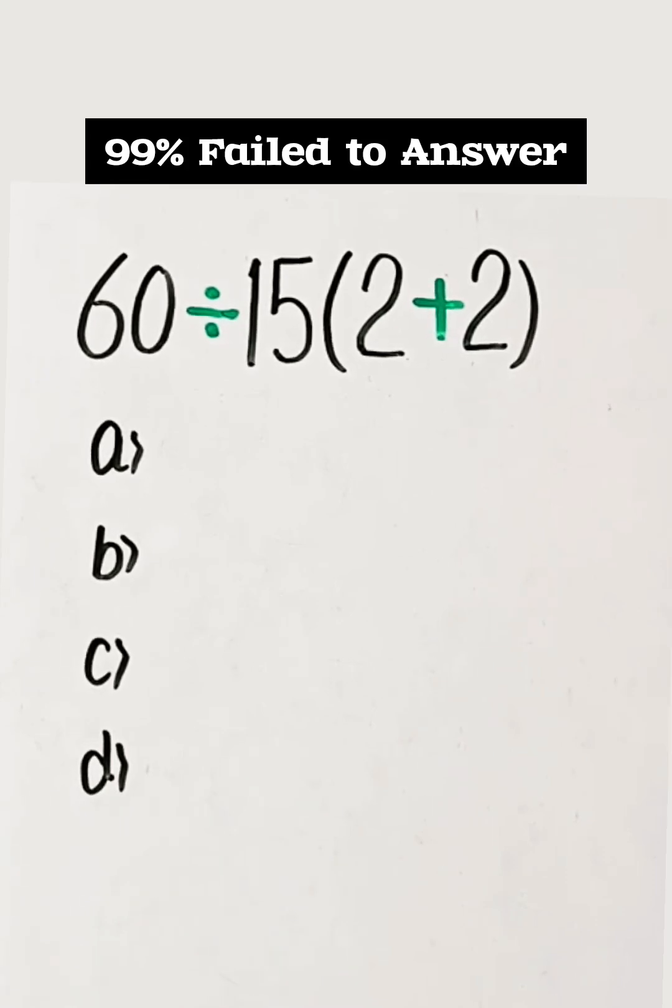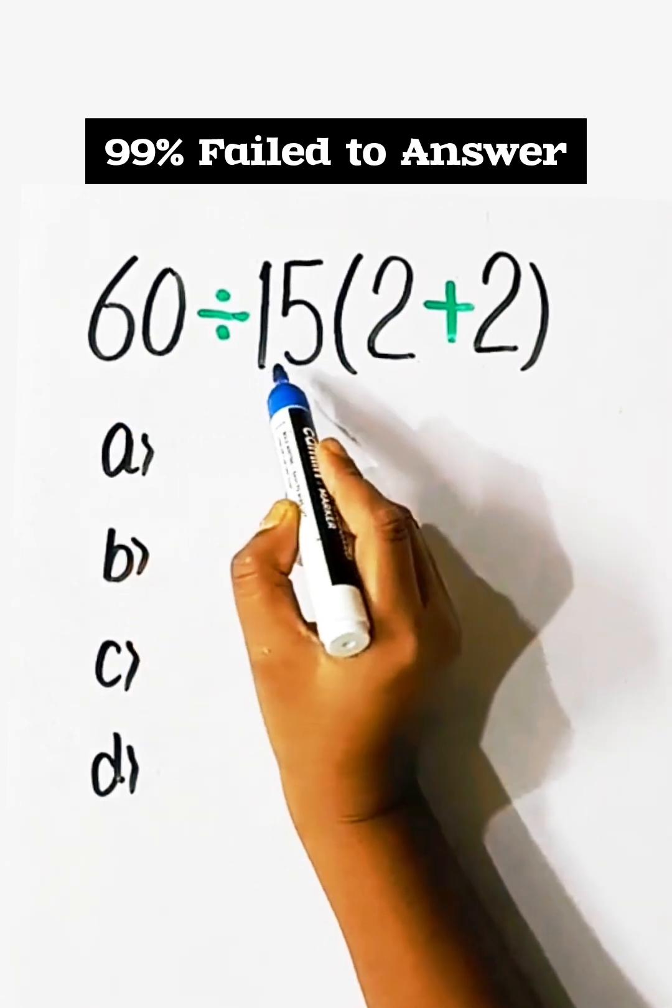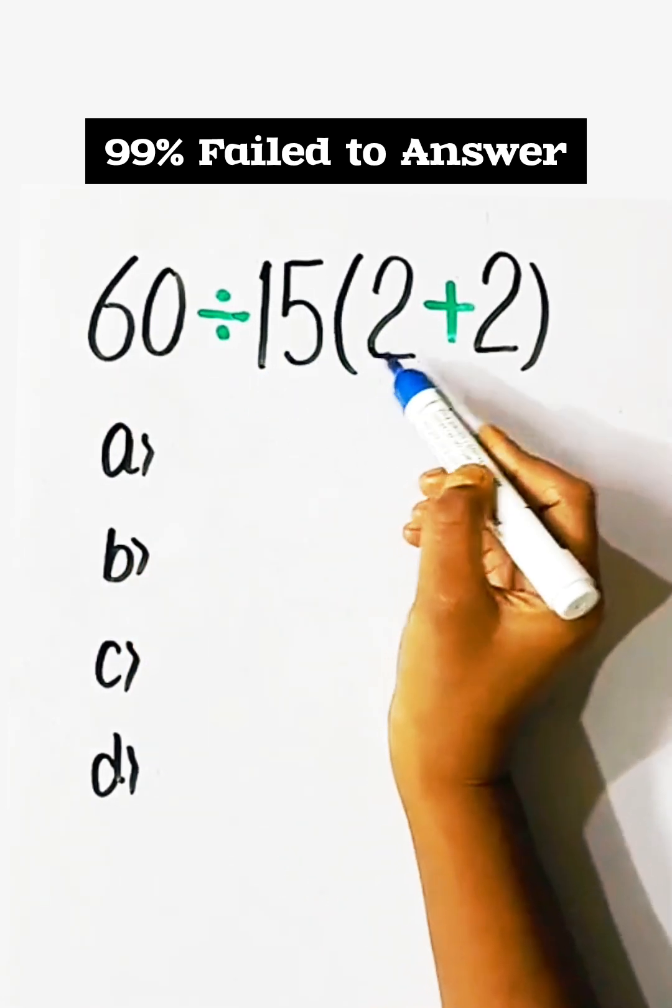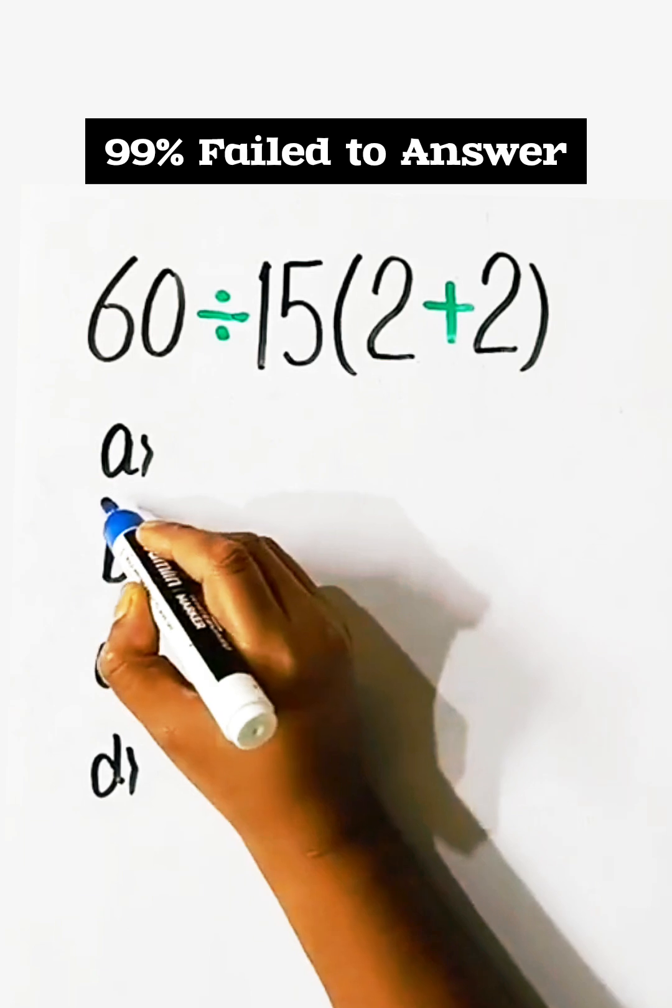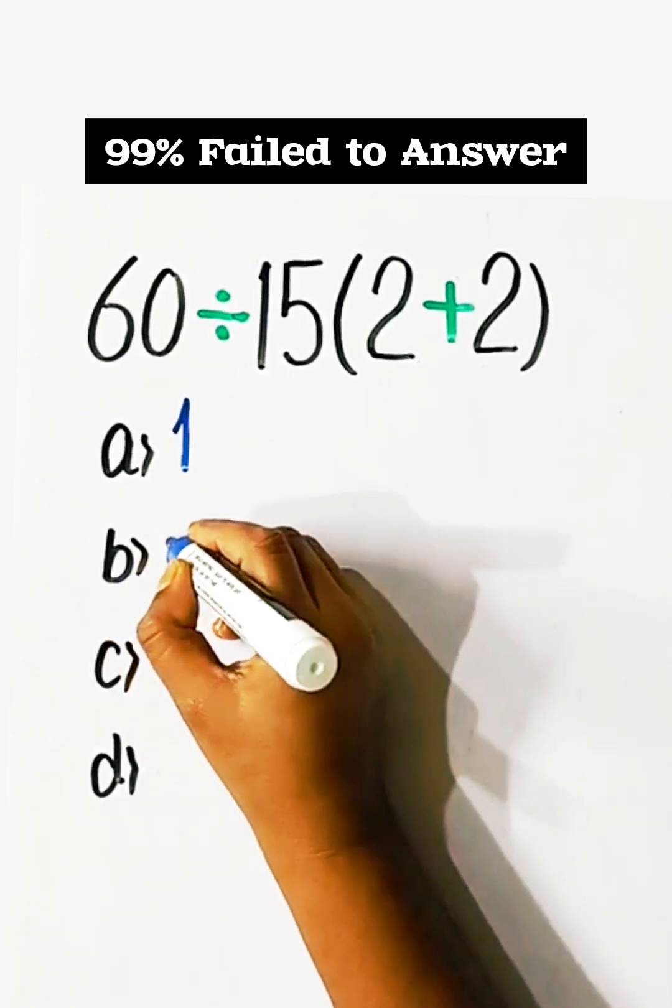99% fail to answer this problem: 60 divided by 15, multiply by 2 plus 2, equals what? Option A: 1. Option B: 16.